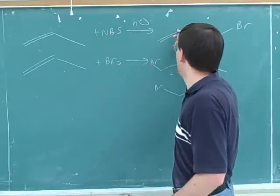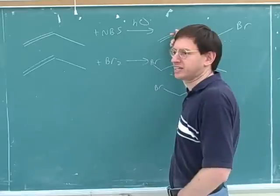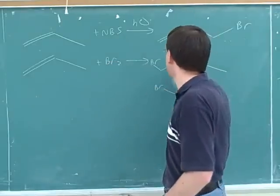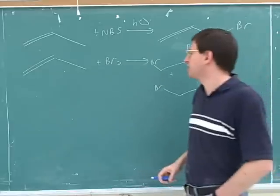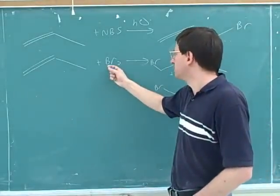That would be a good thing to have in your notes. This is attacking the allylic carbon, and this is destroying the double bond. So notice that if we use NBS, the double bond survives. It's not getting attacked. But if we use Br2, the double bond gets destroyed.